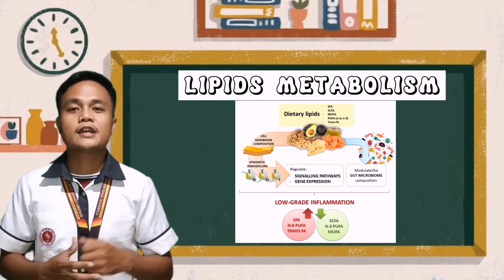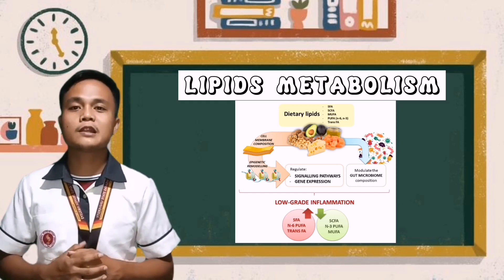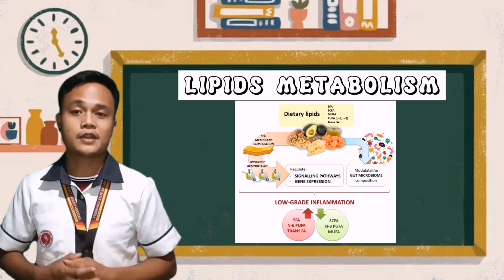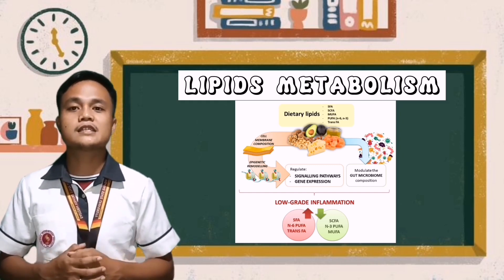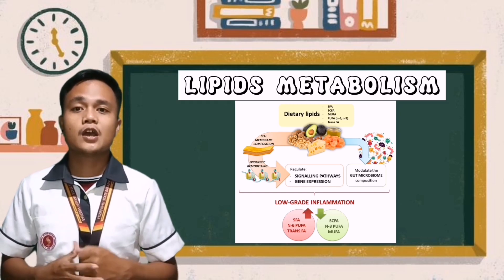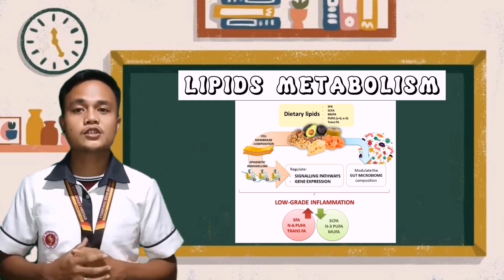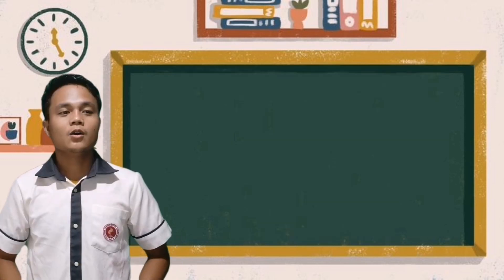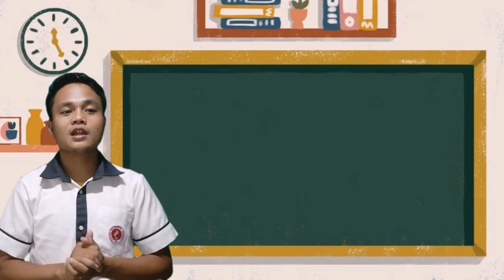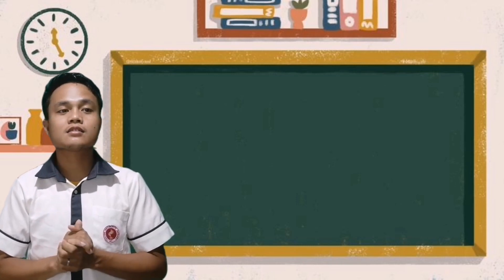Furthermore, this includes pancreatic lipase, phospholipase A2, and cholesterol esterase. The small intestine emulsifies the dietary lipids with bile salts, which function as a detergent. Since you are already familiar with our last topic, we can now proceed to our next topic.